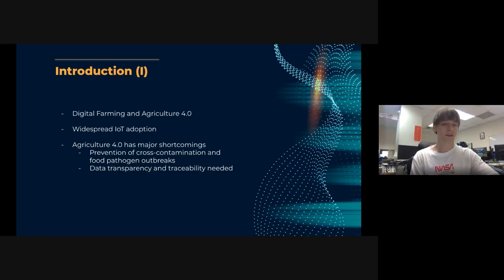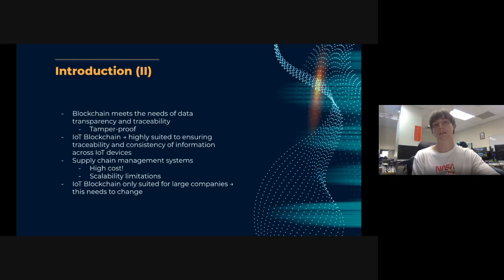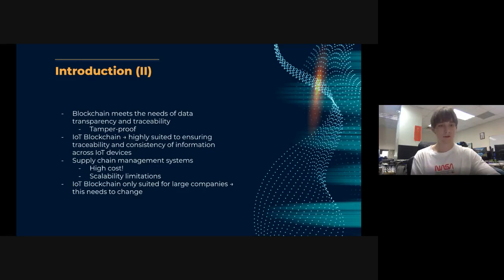However, agriculture 4.0 has major shortcomings including the prevention of cross-contamination and food pathogen outbreaks — which has large implications for COVID-19 — as well as data transparency and traceability. Blockchain naturally provides these. It's tamper-proof, all data in a public blockchain is public by definition, and IoT blockchain is highly suited to ensuring traceability and consistency of information across all IoT devices.